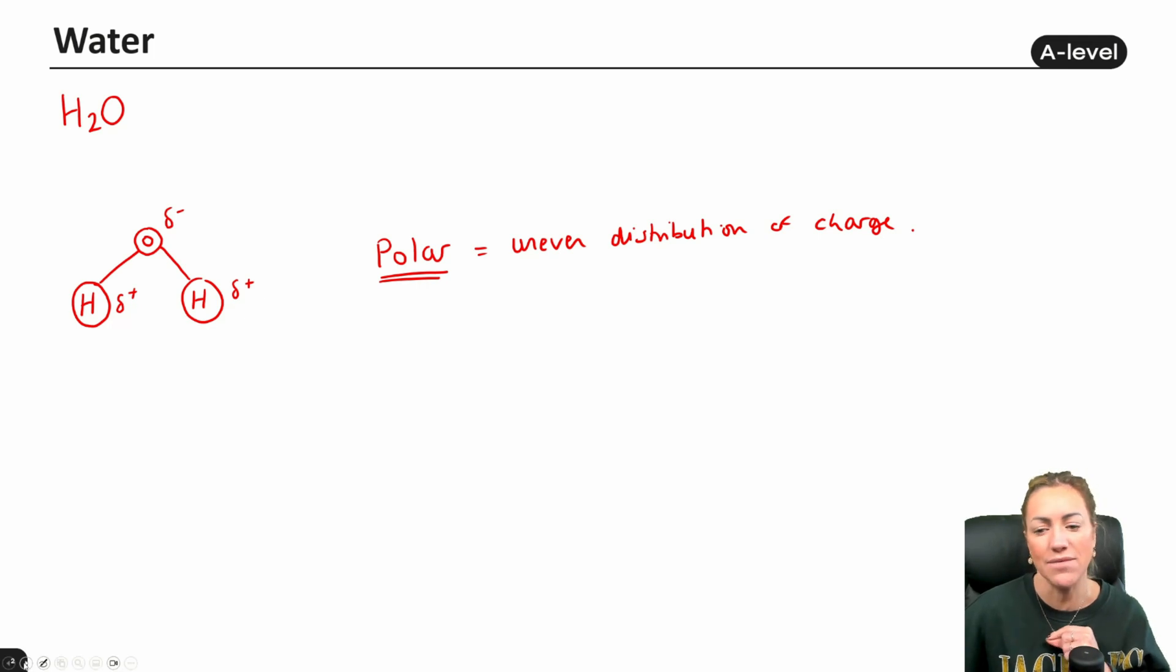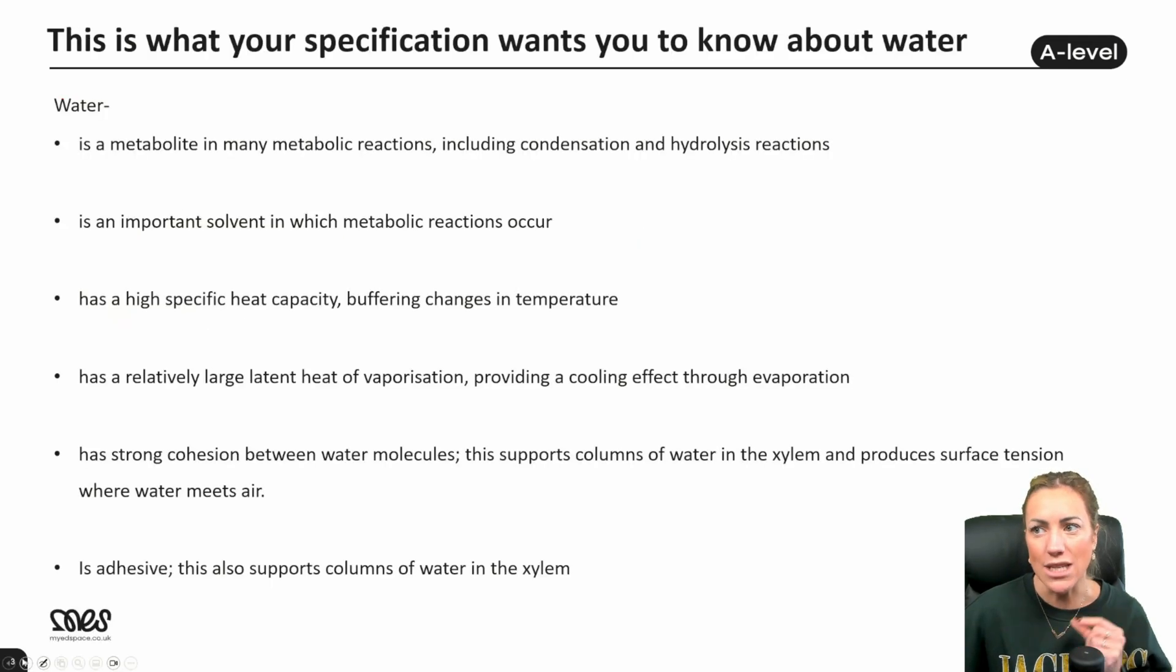So let's go ahead and see what our specification wants us to know in terms of the properties. Now this looks like an awful lot but we have seen quite a few five mark questions on water so we do need to be able to state these properties and explain the benefits. So let's go through them together. The first one, water is a metabolite in many metabolic reactions.